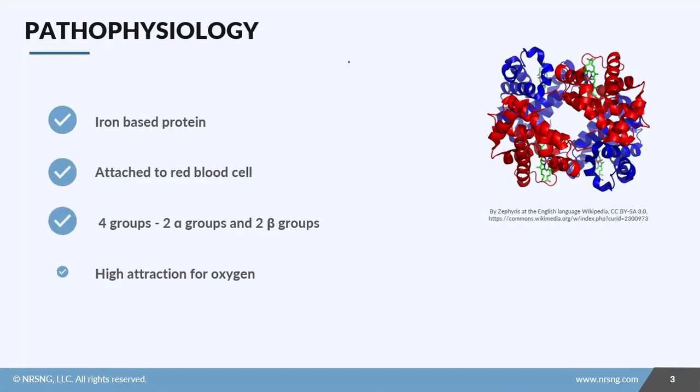I want you to take a look at this image, and I don't want it to intimidate you. It's a molecule for hemoglobin. Pay attention to a couple things. First, you've got two different areas—a blue area and a red area, and you've got two of them. It's an iron-based protein attached to the red blood cell, and their job is to carry O2. They carry other gases too, but they have a high attraction for oxygen.